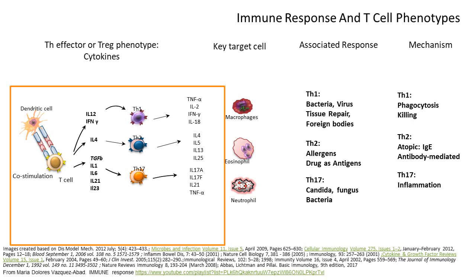Interleukin-4 triggers the TH2 response with a characteristic cytokine profile that stimulates the eosinophil. The key target cell in TH2 is the eosinophil — that's the best way our bodies deal with allergens — using an atopic mechanism with IgE and antibody-mediated mechanisms for cell destruction. Finally, we have TH17, which acts upon the neutrophil. The associated responses deal with danger from candida, other fungal infections, and several other bacteria, primarily through phagocytosis and inflammation.